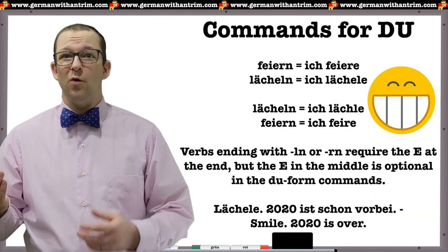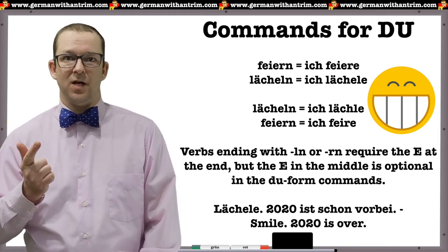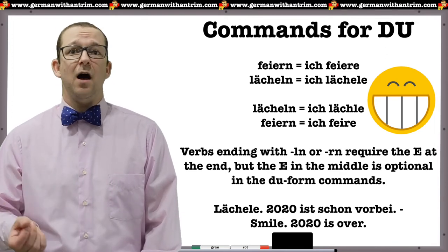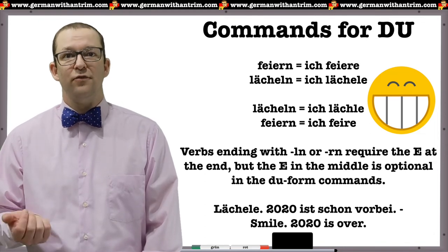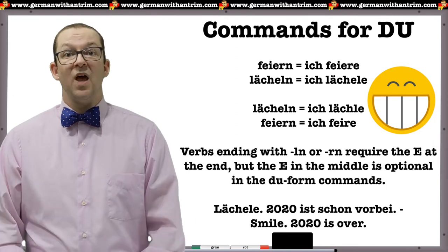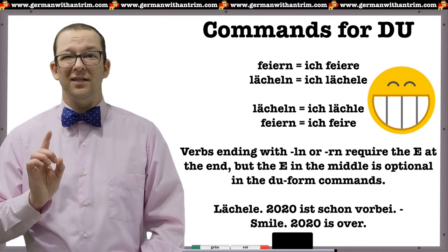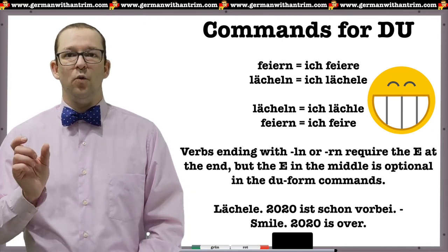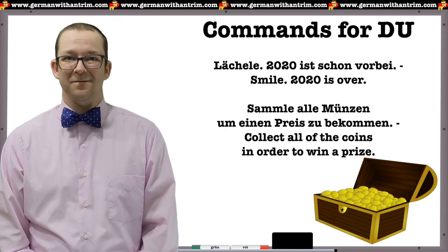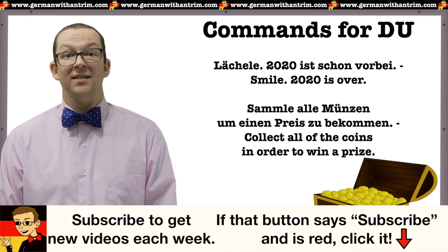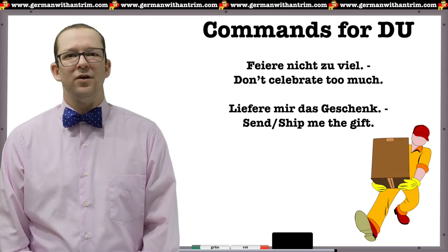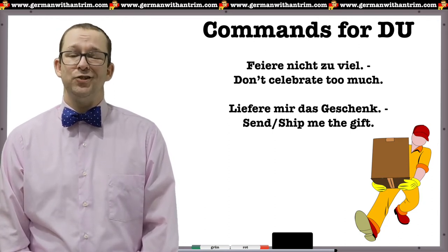Some verbs in German end with LN or RN instead of EN, for example feiern and lächeln. The conjugated ich form is ich feiere and ich lächle. With LN verbs, it is optional to leave out the E before the L; with RN verbs it is less common but still accepted. When making a command from these verbs, you need the E at the end while the one in the middle is still optional. Examples: Lächle — 2020 ist schon vorbei — smile, 2020 is over. Sammle alle Münzen, um einen Preis zu bekommen — collect all the coins to win a prize. Feiere nicht zu viel — don't celebrate too much. Liefere mir das Geschenk — ship me the gift.